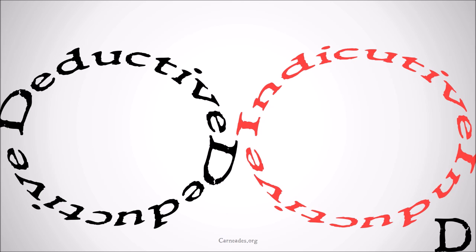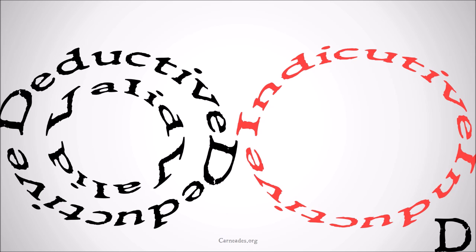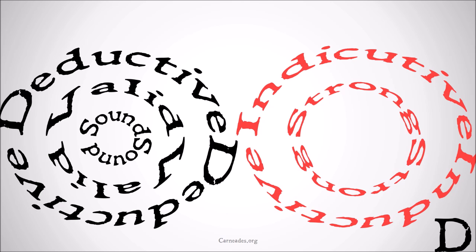There's a video I have on deductive versus inductive arguments if you want more information on those, but for now we're going to dig a little deeper. Within deductive arguments, a type of deductive argument is a valid argument. Valid arguments can only be deductive — any inductive arguments are invalid. A subset of valid arguments, and therefore a subset of deductive arguments, are sound arguments. Within the realm of inductive arguments, you have strong arguments, and within strong arguments you have cogent arguments. A sound argument must be valid and must be deductive; a cogent argument must be strong and must be inductive. We're going to look at definitions of all these terms — starting with valid, then sound, then strong, then cogent.